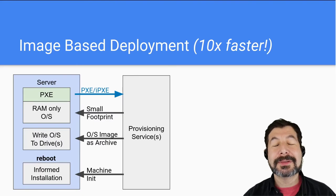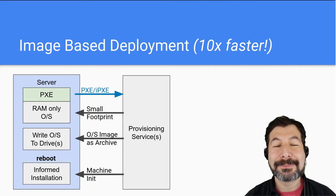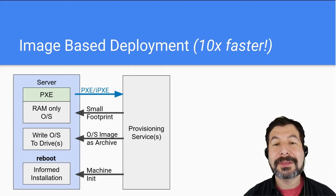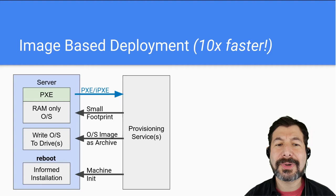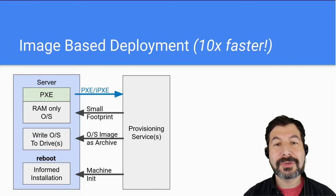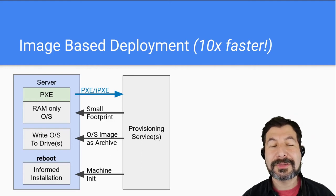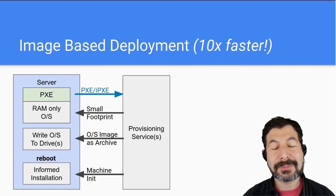Image-based deployment is much, much faster than doing a standard kickstart or pre-seed install. You boot into Sledgehammer — a RAM-only OS with a very small footprint — then take a compressed file (tar, gzip, something like that), write it directly to the disks after automation sets the drive partitions and installs your kernel bootloader. Then you reboot and it goes directly to that image. It skips all the installation checks and download components — you produce an image, copy it, it's highly compressed, and you're done.